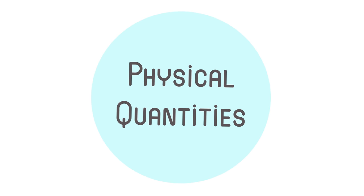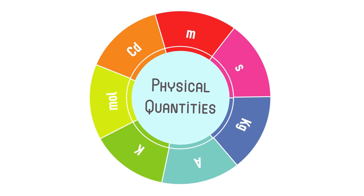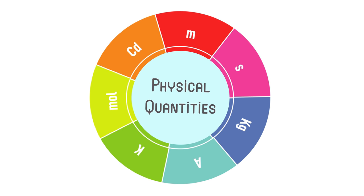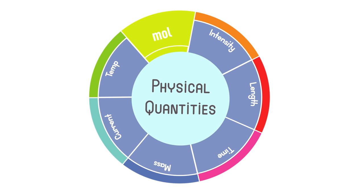Physical quantities are divided into two categories. Base quantities form the base or foundation of other physical quantities. In other words, these quantities are the basis with which derived quantities are expressed. These quantities are length, mass, time, temperature, intensity of light, electric current, and the amount of a substance.